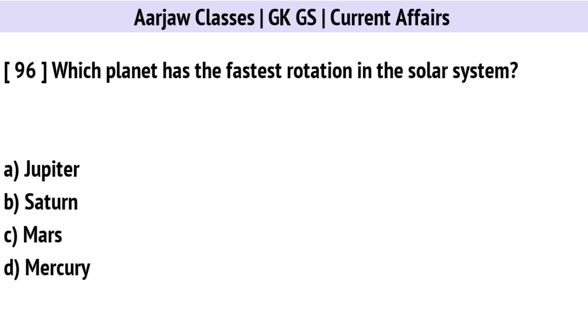Which planet has the fastest rotation in the solar system? Correct option is A: Jupiter.